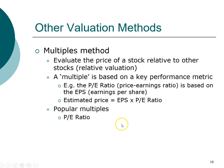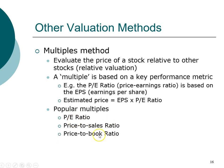Other popular multiples include the PE ratio, the price-to-sales ratio — so instead of looking at earnings, which is income to the company, we look at revenue or sales. Another one is market-to-book, where book refers to book value. So this is the market price to the book value per share of the stock. All of these are common multiples.